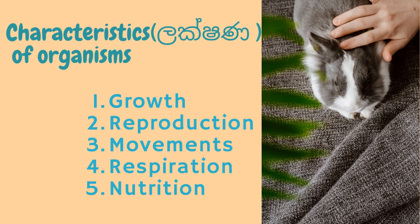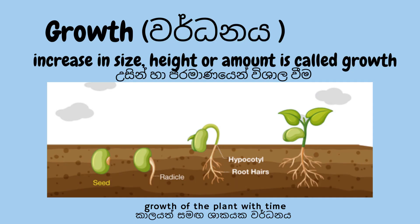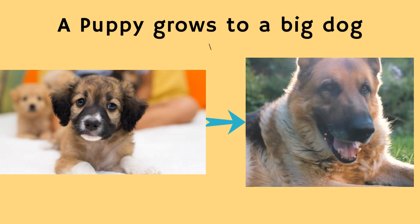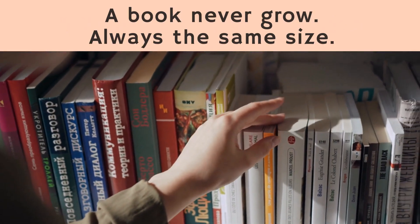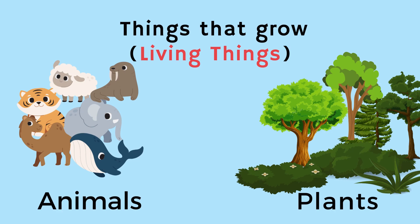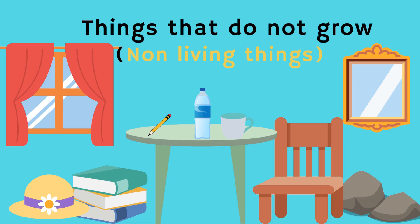Next, let's learn about the characteristics of organisms. They are growth, reproduction, movements, respiration, and nutrition. Growth is the increase in size, height, or amount of an organism. A puppy grows to a big dog, while a book never grows — it is always the same size. We call things that grow living things, and things that do not grow non-living things.